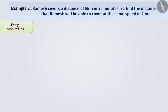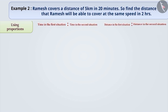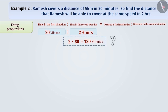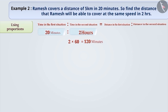Now let us solve this example using proportions. Since the speed is the same in both situations, the relation between time and distance is proportionate. That is, time in the first situation to time in the second situation equals distance in the first situation to distance in the second situation. The time for the first situation is 20 minutes and for the second situation is 2 hours, expressed as 120 minutes. In a ratio, the units of both quantities need to be the same. So the time for the first situation is 20 and for the second is 120.